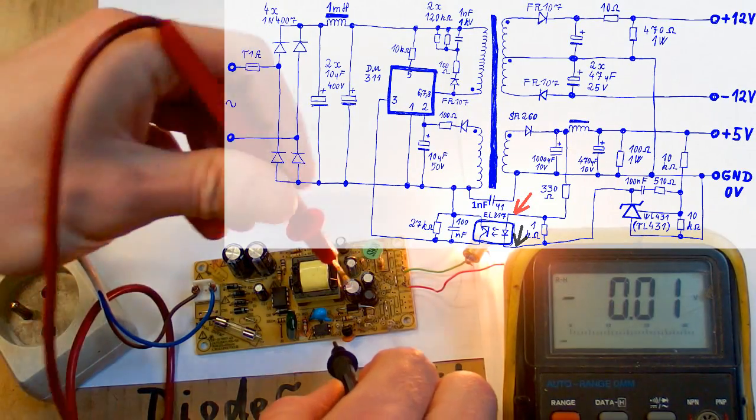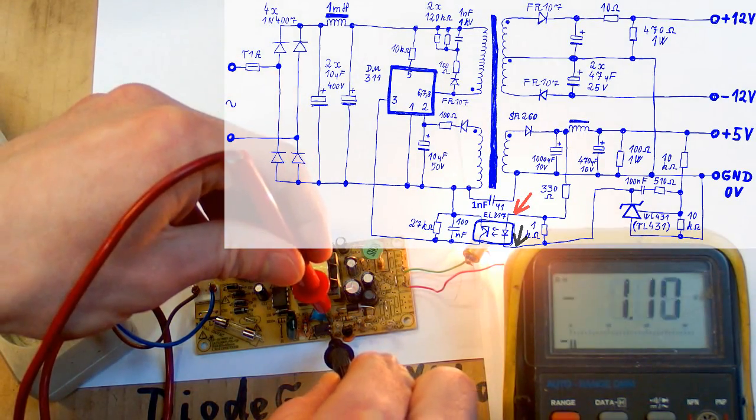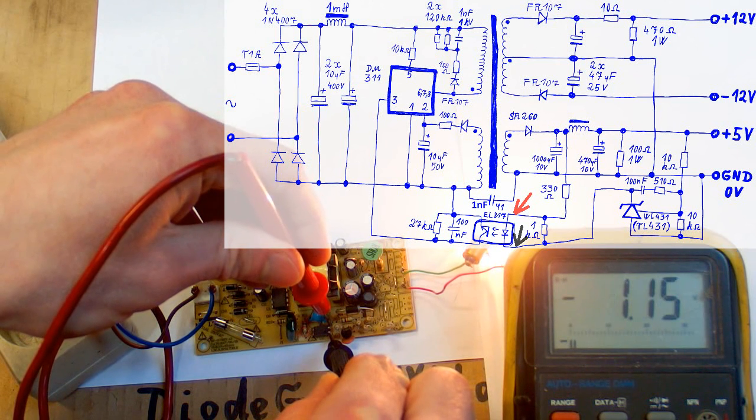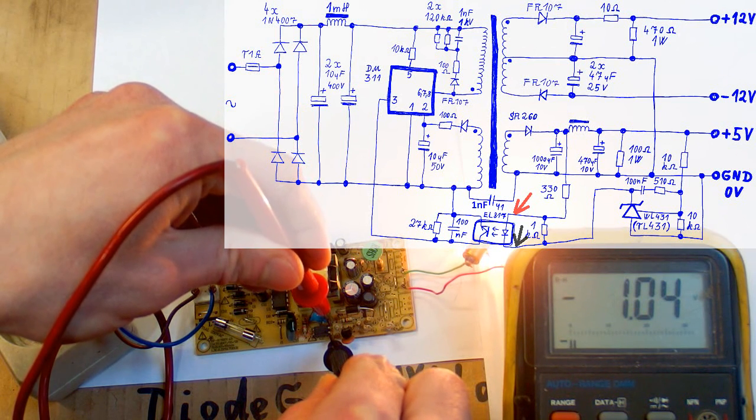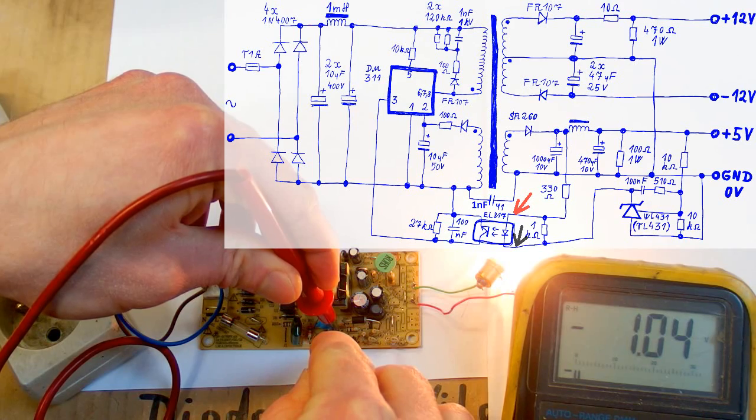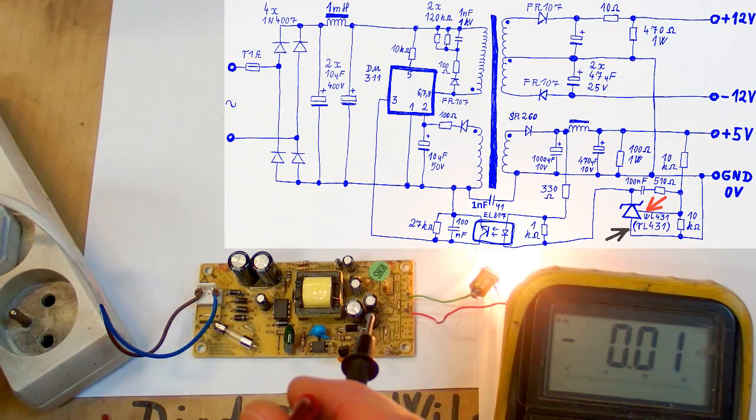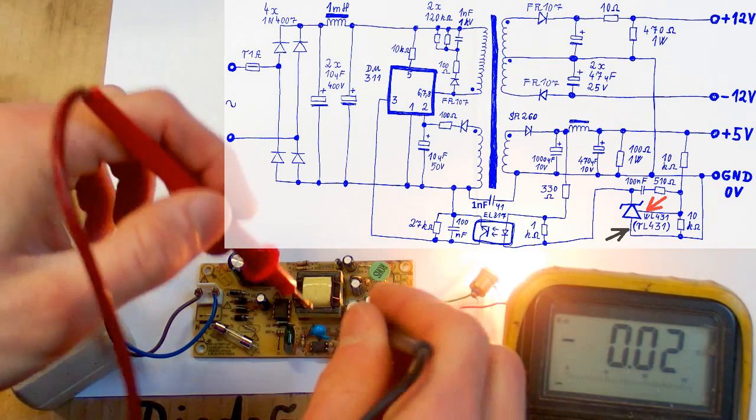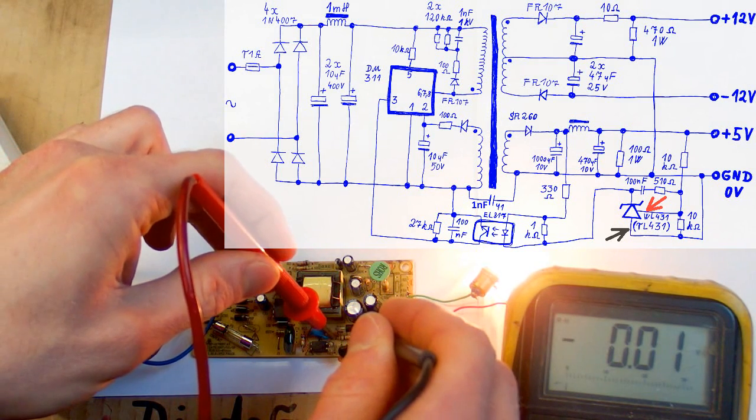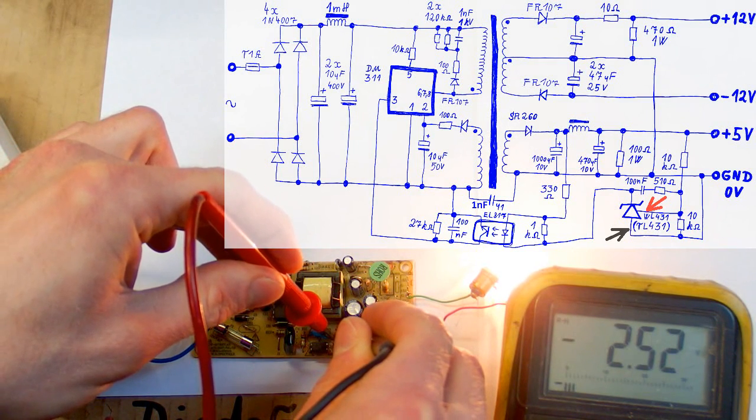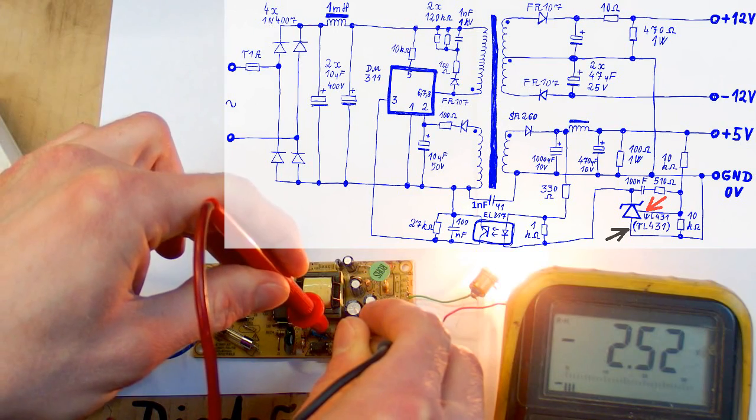Now the voltage drop of the LED in the optocoupler is going to be about 1 volt. It's a very low voltage drop because it's an infrared LED actually. Now the voltage at the input of the 431 voltage reference is 2.5, which I expected.